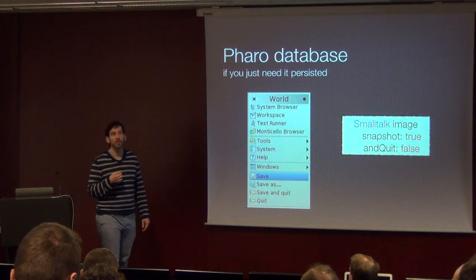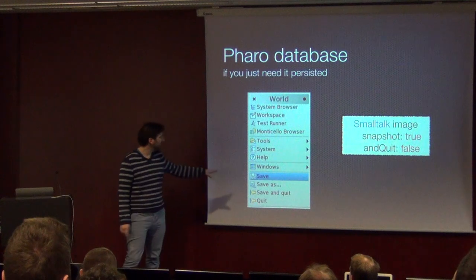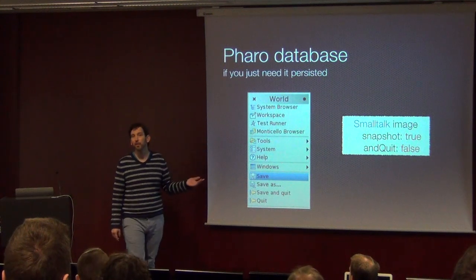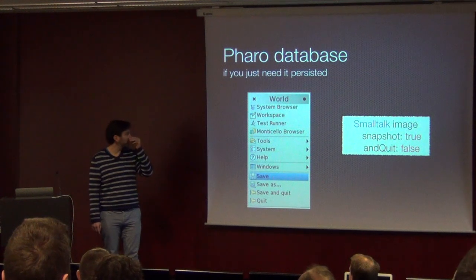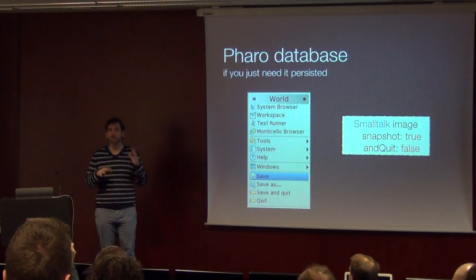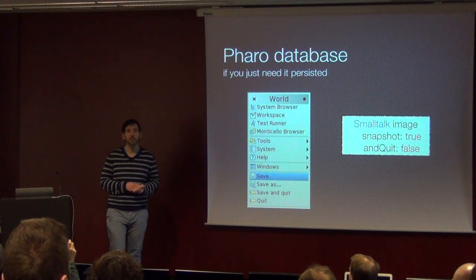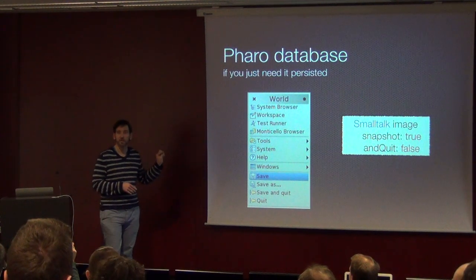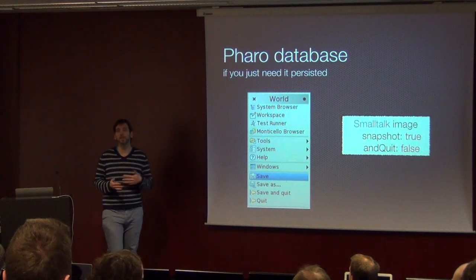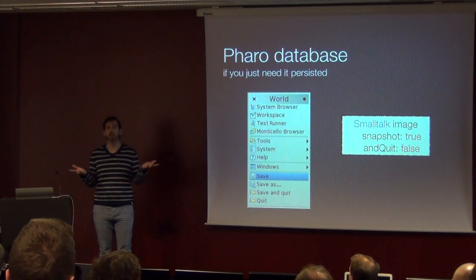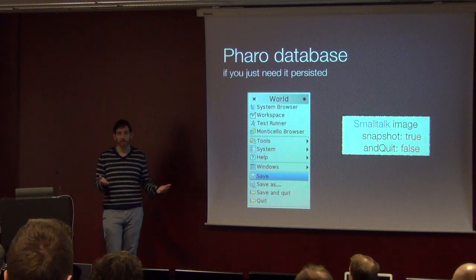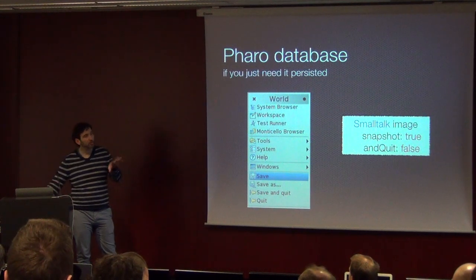One of my favourite databases is called the Faro database. It has manual transactions like a save menu, or you can use it in a program — you can just save the whole image. That's the thing I tell people when starting a project with Faro: just care about your model, create your objects, your test objects, whatever you do — a web application. And if you need to persist, open the world menu, hit save, and you're done. You can quit the image, come back, and the data is still there. At that stage, there's no benefit of having an SQL engine, MongoDB, or anything else — it just keeps you at the right spot in your project.